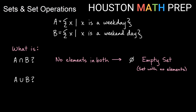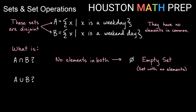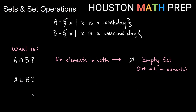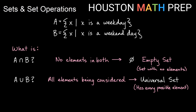Another way that we'll say that sets have no overlapping elements is that we'll say the sets are disjoint if they have no elements in common. Now let's look at A union B. The union just means it needs to be in one or the other, or it can be in both. So all the weekdays are going to count, and all the weekend days are going to count as well. That means all seven days of the week are going to fit in the union here. When we talk about a set that has every possible element we could be considering, we call that the universal set. Because A union B has all seven days of the week, that's considered our universal set for this type of situation.